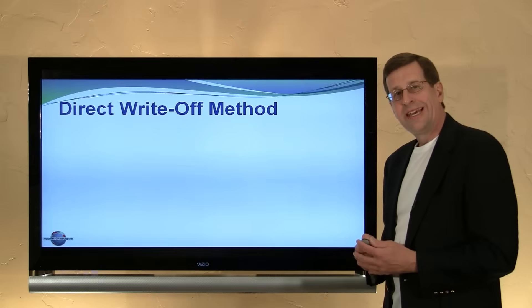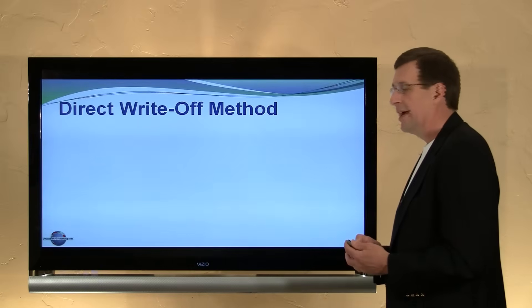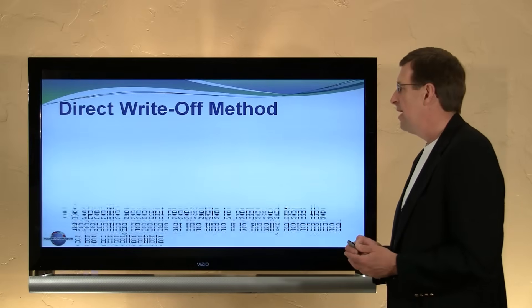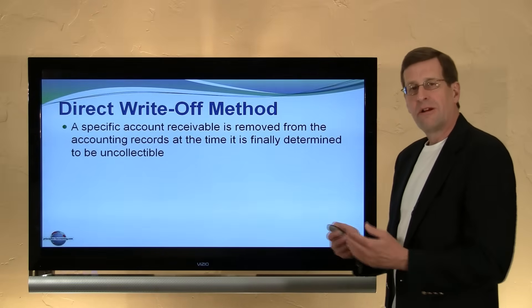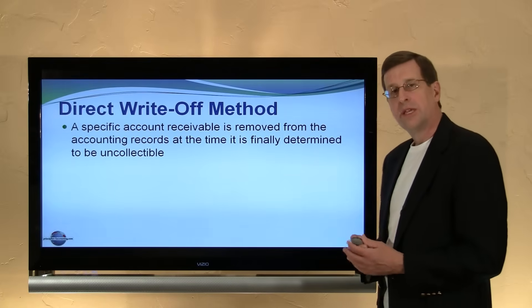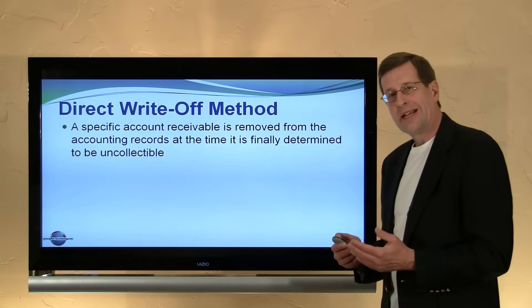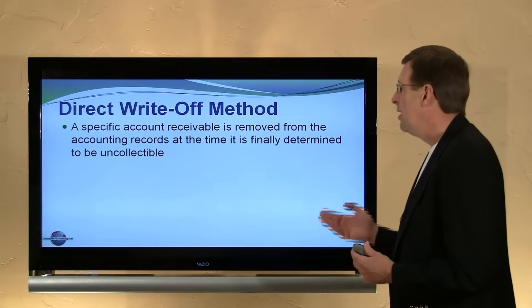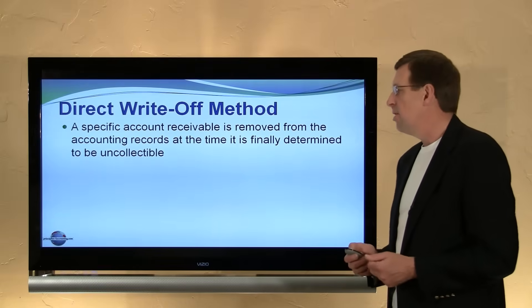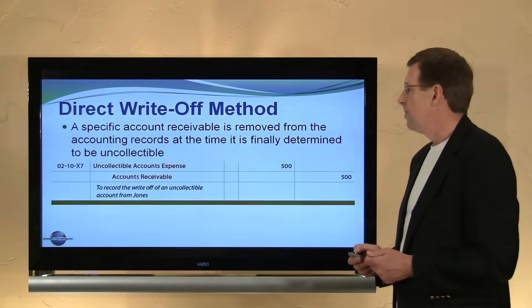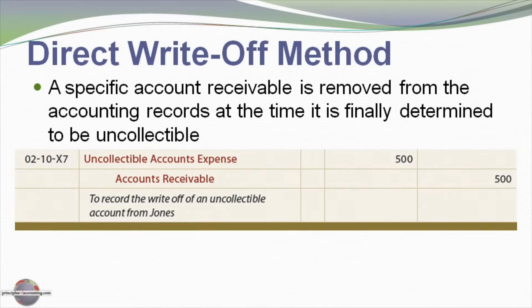There are several ways in which one can account for or think about uncollectible accounts. One method is the direct write-off method. With the direct write-off method, we simply don't concern ourselves in the accounting records with uncollectible accounts until we finally determine that an account cannot be collected, at which time we write it off. Here is a journal entry for that: we debit uncollectible accounts expense and we credit accounts receivable at the time we write off the account.